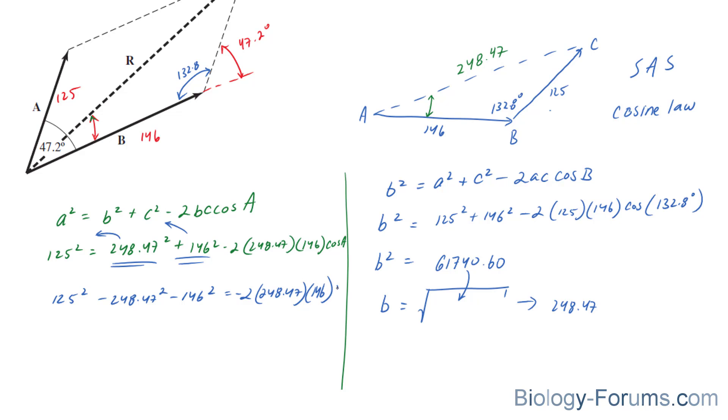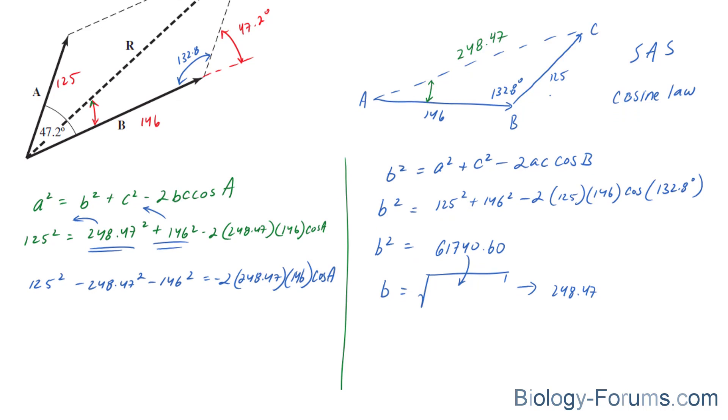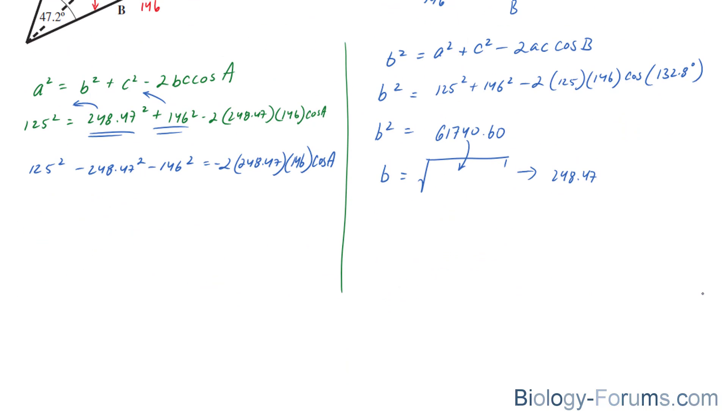So, we end up with 125 squared minus 248.47 squared minus 146 squared is equal to the remainder. And, I apologize for the small writing. What I'll do is, slightly bring this over. There you are. Now, what we'll do is, divide both sides by negative 2 times 248.47. And, that cancels this out on the left side. And, on the right side, we also do the same. Negative 2 times 248.47, 146. And, this will give us cosine A.